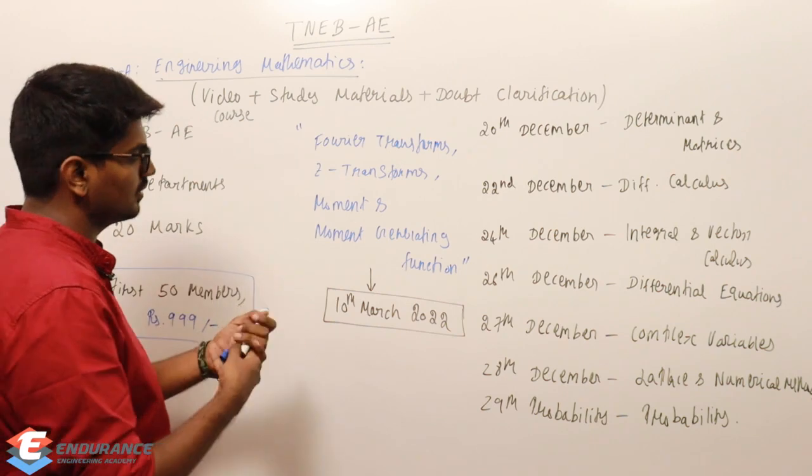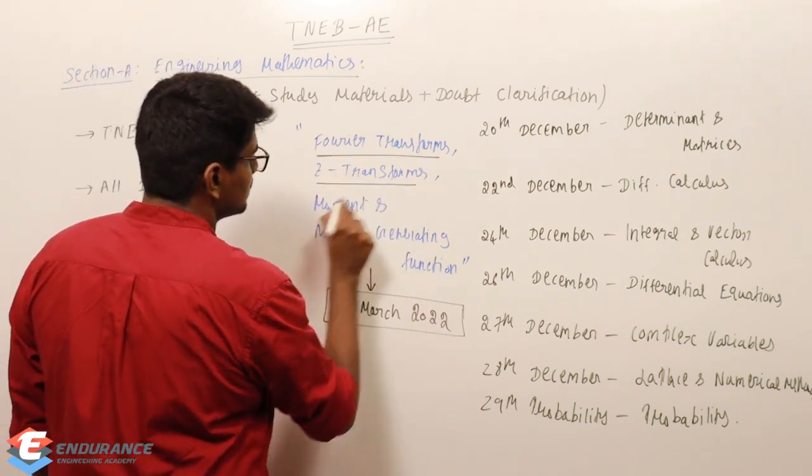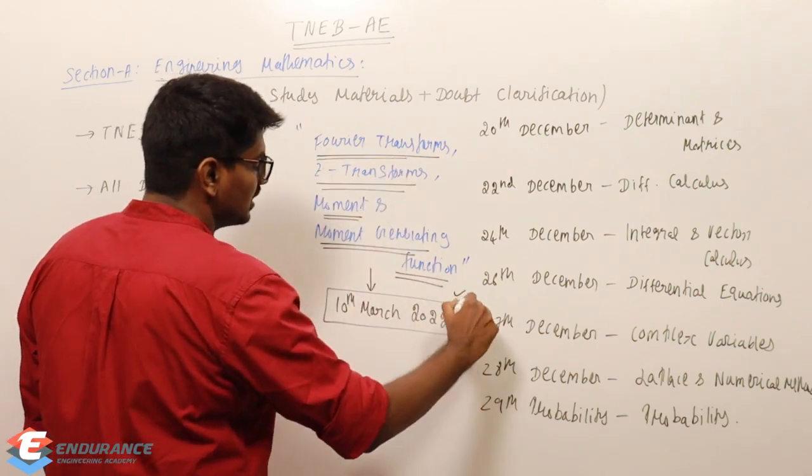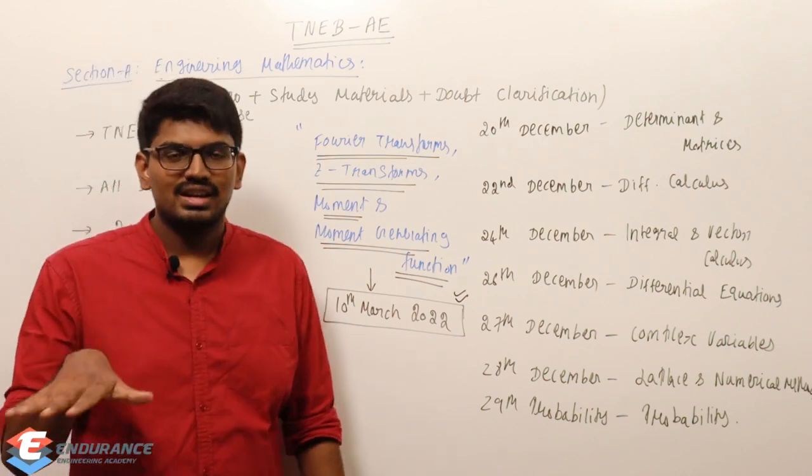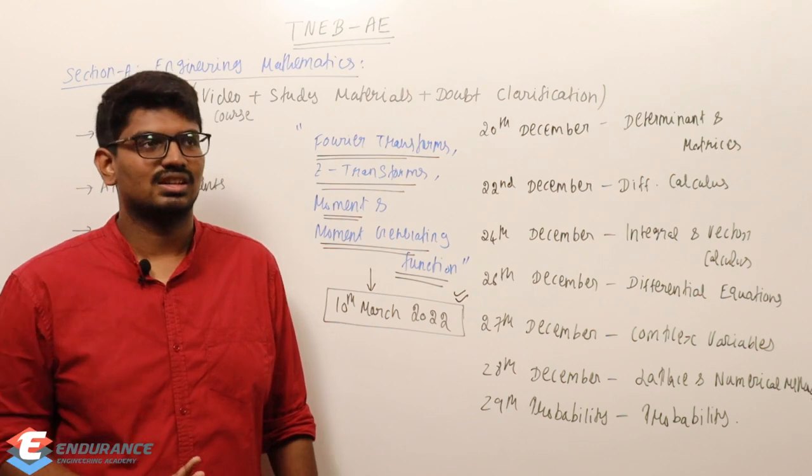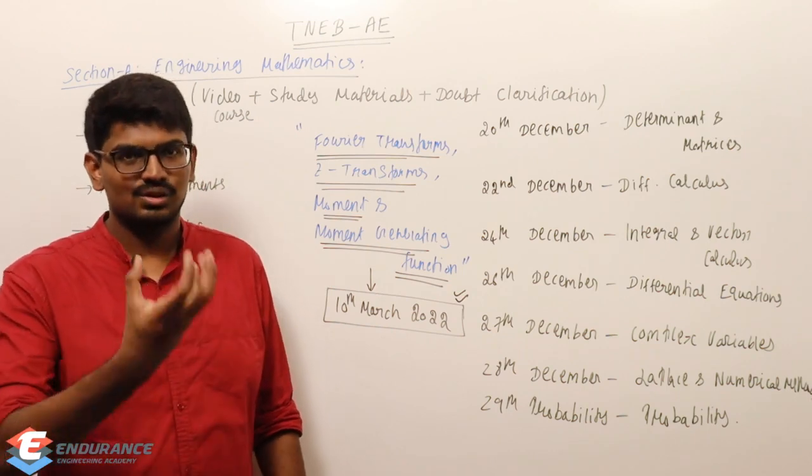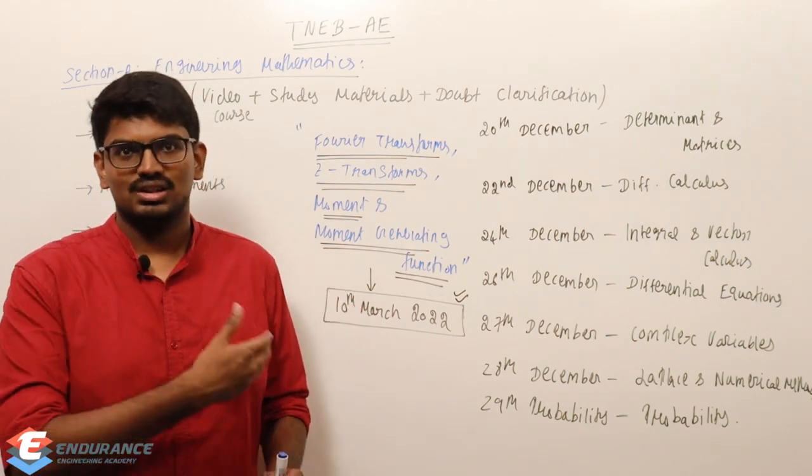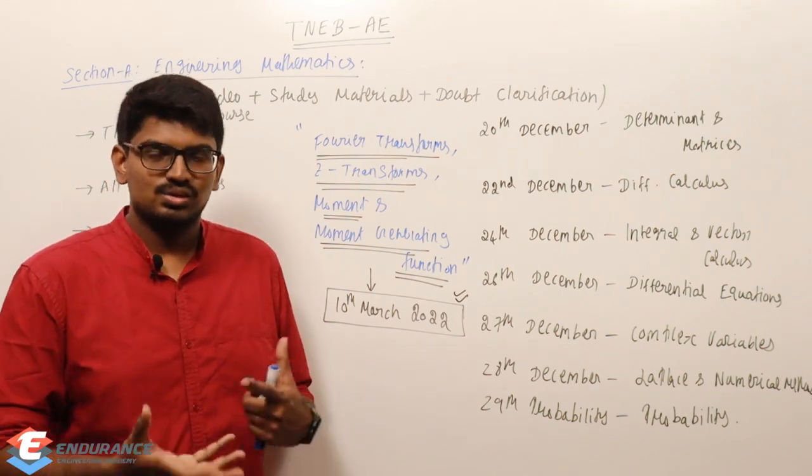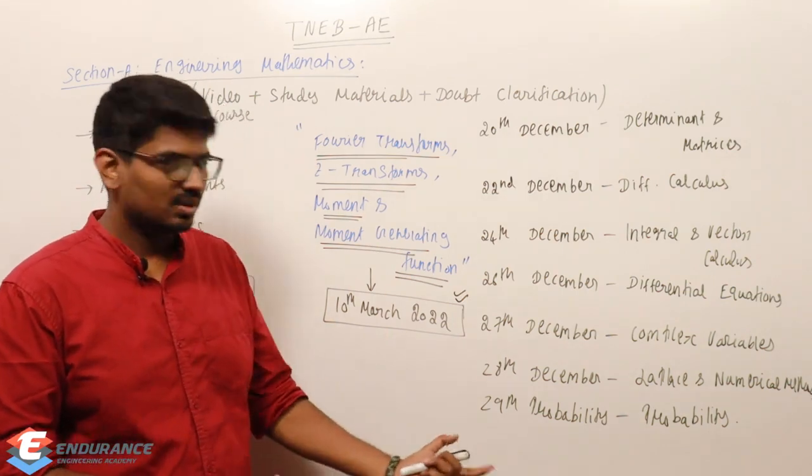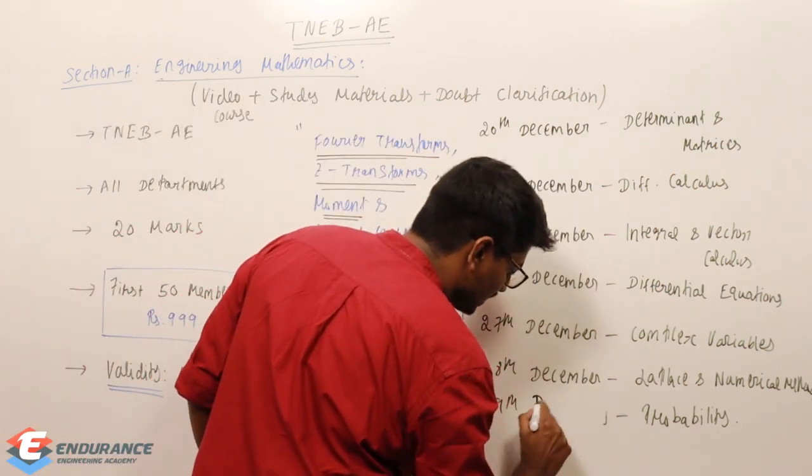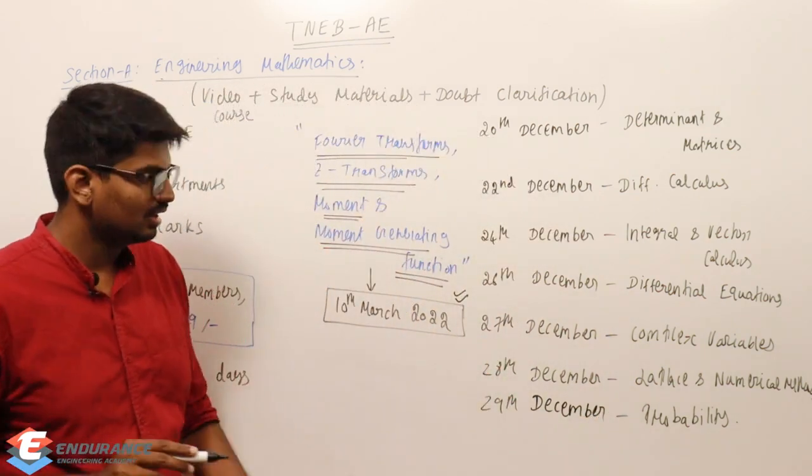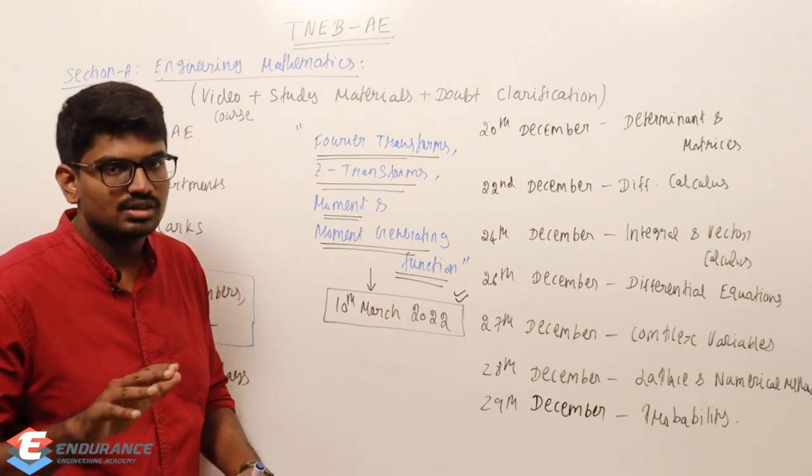And, coming to these topics. Fourier transforms, Z transforms, moment, and moment generating function. Again, this is March, March 10th, for coinciding with what we have for them. That is, mechanical, is the plan. So, mechanical, Fourier transform, Z transform, moment generating function, March 10th, upload. So, you can get it, upload. Because, that is the plan. So, this video, in the 29th December. So, 29th December, you will complete the major portion, and the minor portion, will be done in March 10th. Anyways, you will have validity, 4 months, 120 days. So, when you register, you will have no issues.